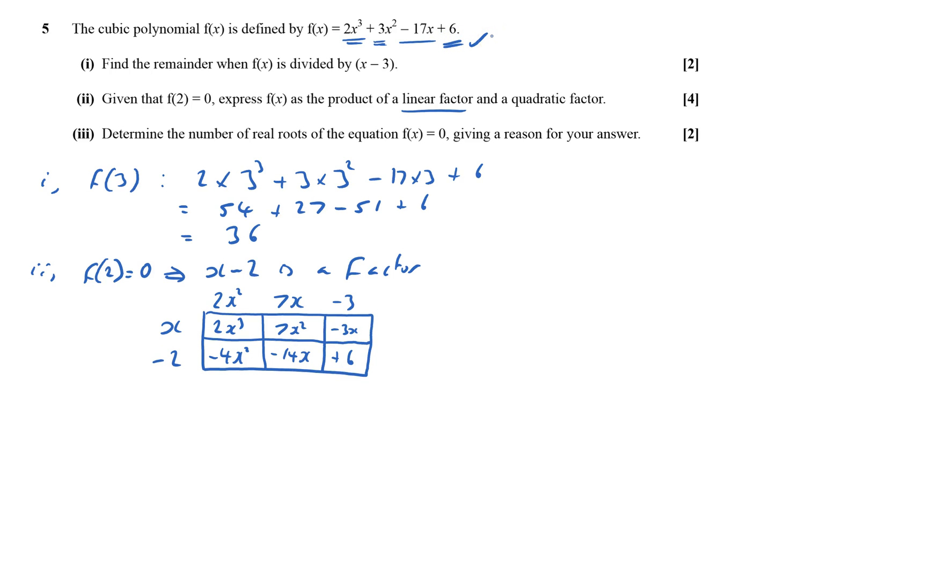Therefore my factorization is (x minus 2) times (2x squared plus 7x minus 3). It's worthwhile writing it down explicitly. Finally, determine the number of real roots of the equation, giving a reason for the answer.